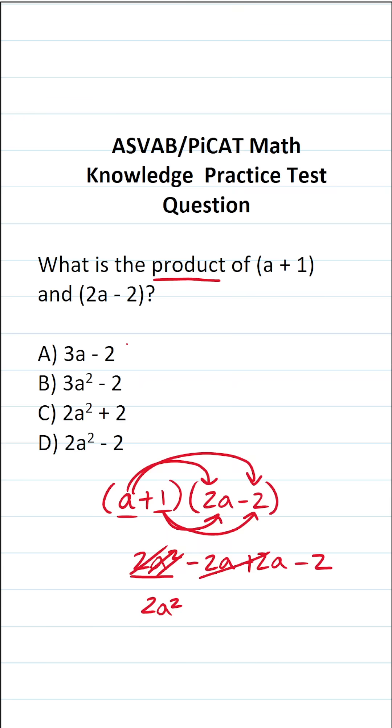Negative 2A plus 2A is 0. These cancel each other out. In other words, then we're just left with negative 2. So the answer to this one, what is the product of A plus 1 and 2A minus 2? It's 2A squared minus 2, which is answer choice D, of course.